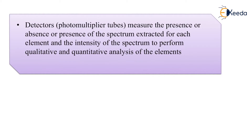Detectors are very important in this process. Here they have taken the example of photomultiplier tubes, though various other kinds of detectors are also available. These detectors measure the presence or absence of the spectrum extracted for each element — once the entire discharge process takes place, the detectors measure the presence of the spectrum of a particular element.